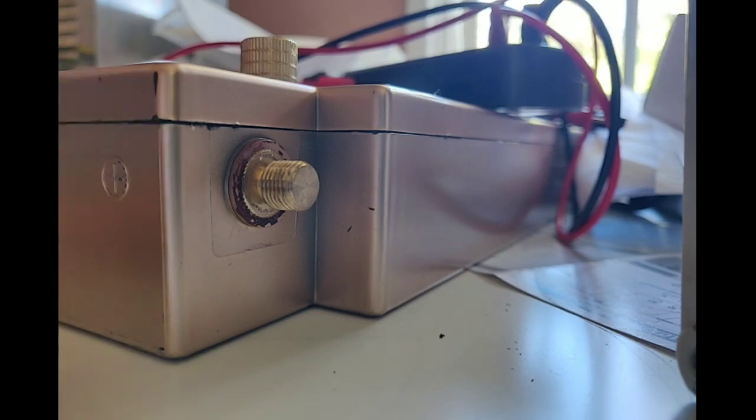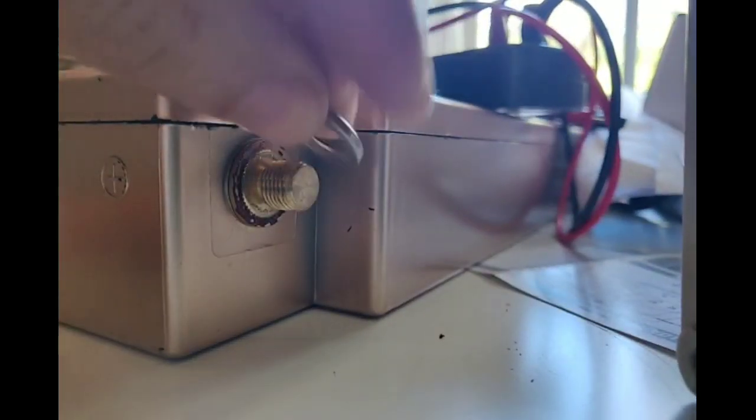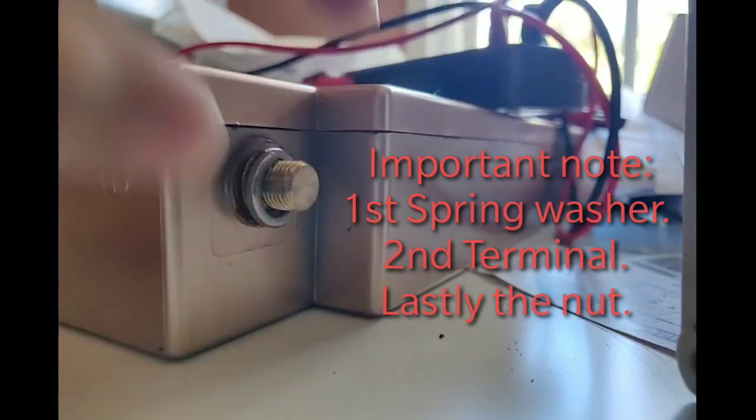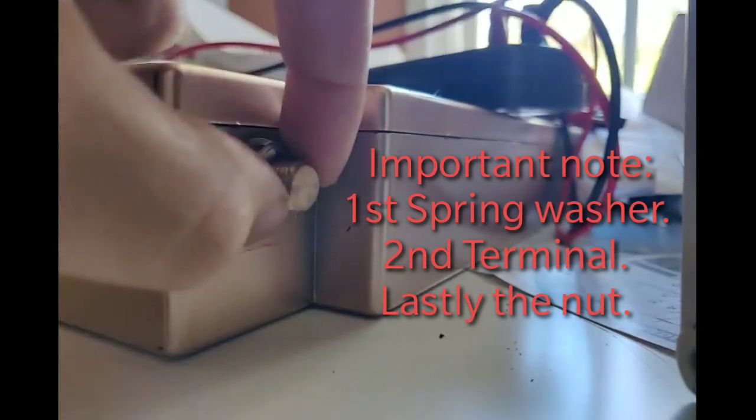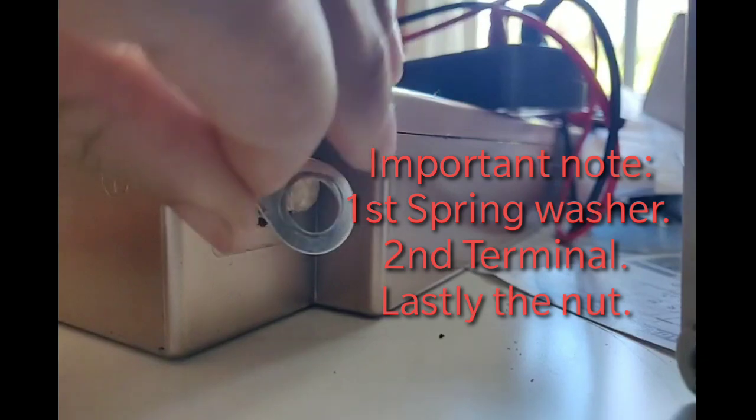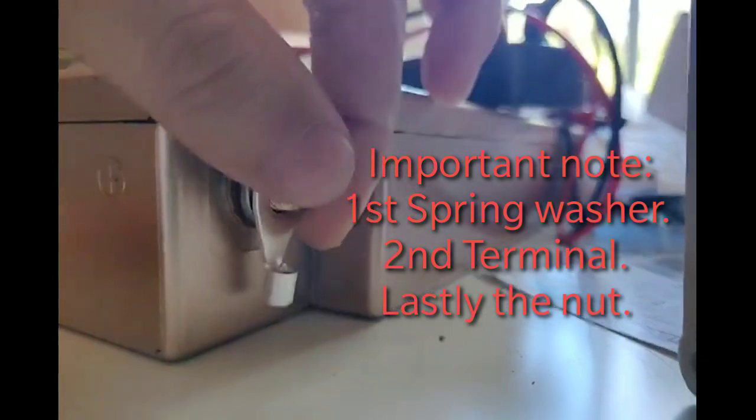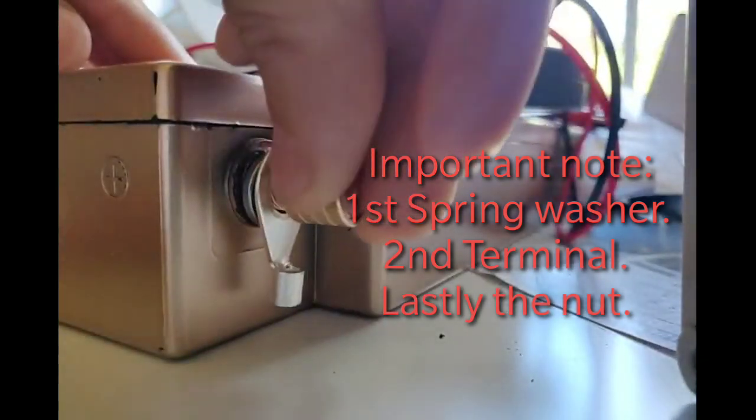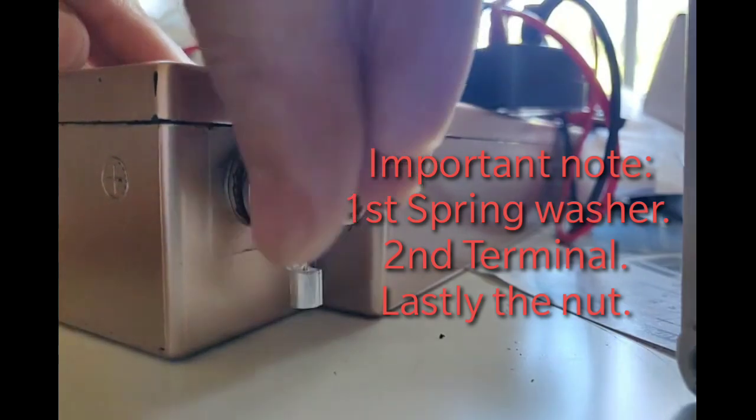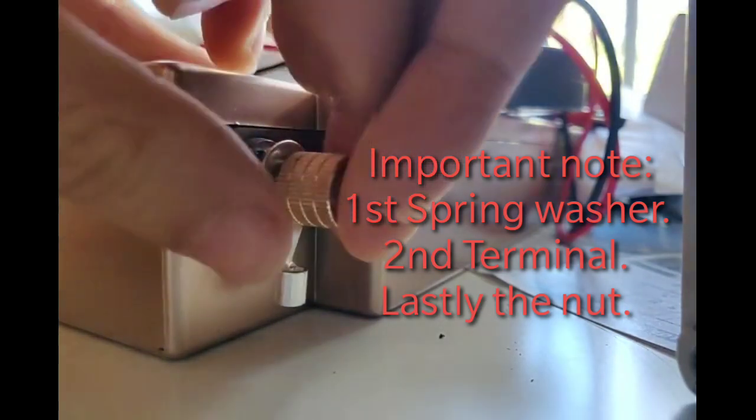So as you can see, I've just got the positive terminal here. What you will come with now is we've actually paired it up nicely with a spring washer, stainless steel. Then you've got your terminal which you attach to your cable and crimp yourself, and then at the end it will be your actual nut which you tighten by hand.